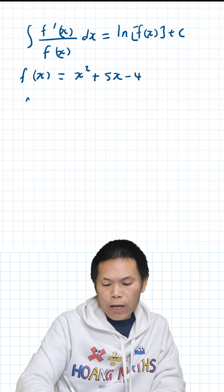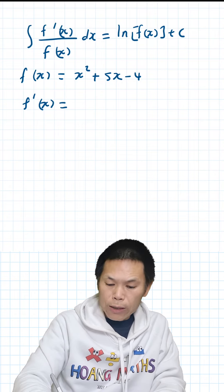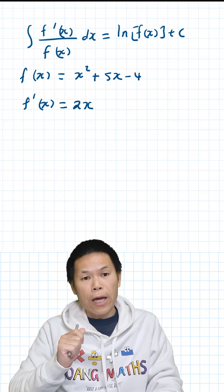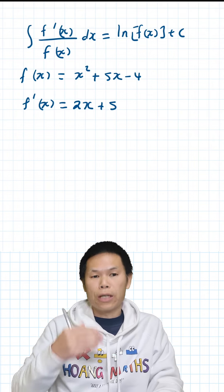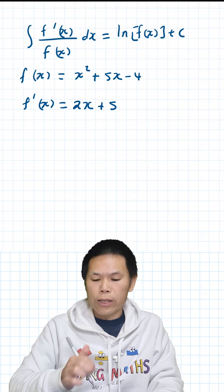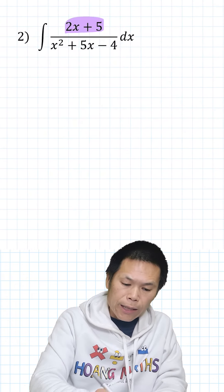So if we differentiate this, f dash x, and we differentiate x squared will give me 2x, and we differentiate 5x so give me 5, and of course differentiate a constant give me 0. So in another word, differentiate negative 4 is equal 0. So there you go, this is f dash x and this is f of x.